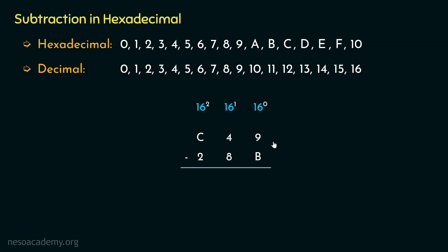We consider the least significant digits first. The minuend digit 9 is less than the subtrahend digit B. Now B in hexadecimal is 11 in decimal, so we are subtracting 11 from 9. We need to borrow. If we borrow 1 from the next position, we are left with 3 there, and the minuend here becomes the two-digit hex number 19 — that is, we borrowed 10 hex (which is 16) and add 9, giving 25. From 25 we subtract 11 (B), leaving 14. And 14 in decimal is E in hexadecimal, so the result in the least significant place is E.